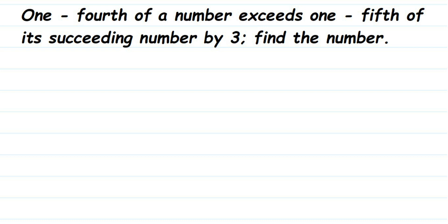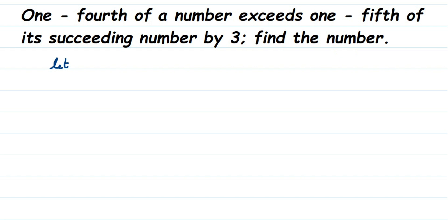Here's a question from the comments: 1/4 of a number exceeds 1/5 of its succeeding number by 3 - find the number. We don't know this number, and whenever we have to find an unknown thing we're going to assume a variable. Let the number be X.